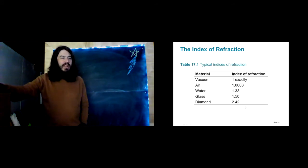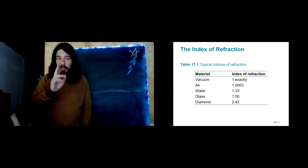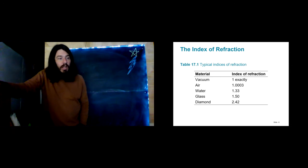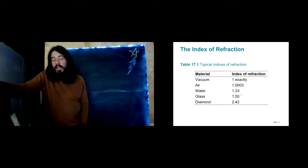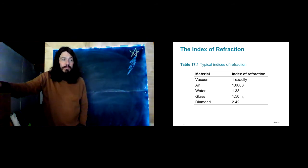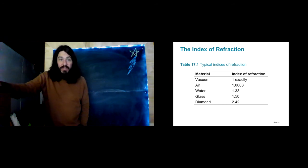Here are some typical values. In a vacuum, N is exactly one — that's because light travels three times ten to the eighth meters per second in a vacuum. In air, it's extremely close to one; for the purposes of solving problems in this class, you can just call it one. Water is about one and a third — light travels about three fourths the speed in water as it does in air. Moving along to glass, light travels about two thirds the speed of light in a vacuum when it's in glass.